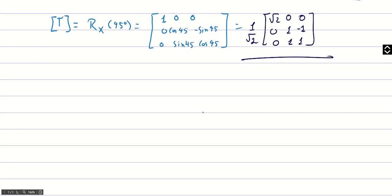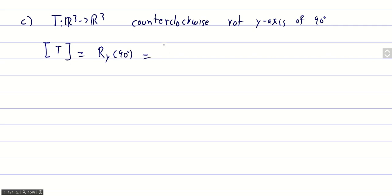And the last transformation that we need to obtain is a transformation, again, from R3 to R3, but in this case, it should represent a counterclockwise rotation about the y-axis. So in this case, the matrix representation of this linear transformation is just the rotation matrix about the y-axis of 90 degrees.